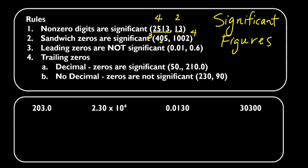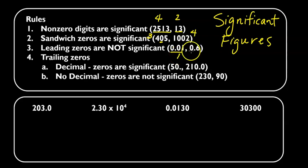Leading zeros are not significant. Leading zeros are zeros at the front of your number. Anytime you have leading zeros, remember they are not significant. So these two zeros are not significant, so this only has one significant figure. The next number also has a zero in the front, and that's not significant because it's a leading zero, so this only has one significant figure — only the six is significant.